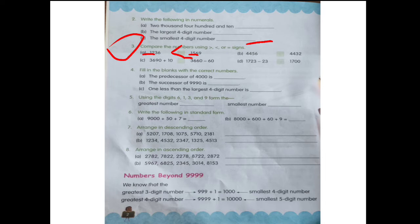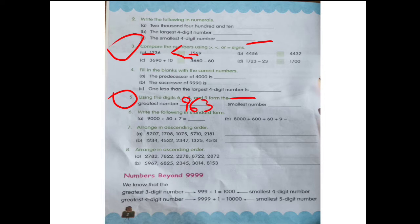Question number 5 — this is what you have to do in the book. We are given 4 digits: 6, 1, 3, and 9. We learned the greatest number in the last class. To make the biggest number, we write the digits in descending order: 9, 6, 3, 1. To make the smallest number, we write the digits in ascending order: 1, 3, 6, 9.